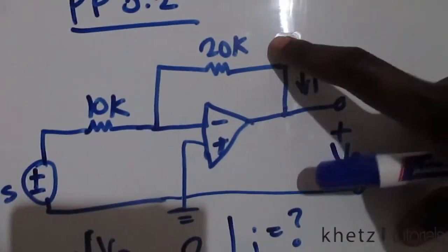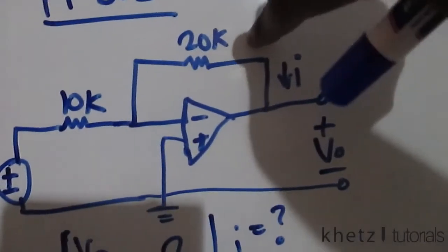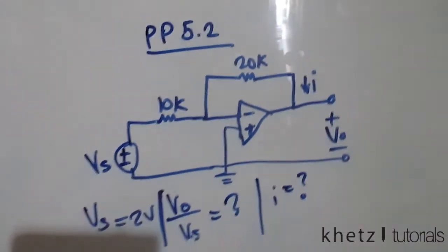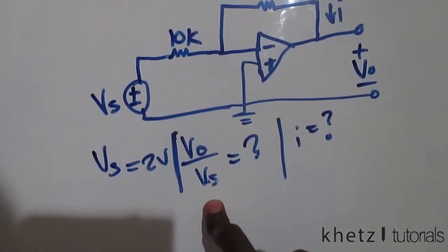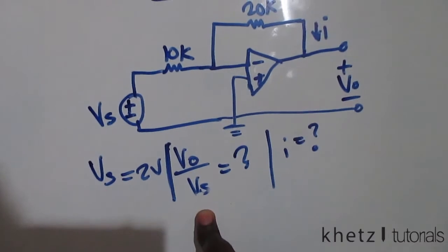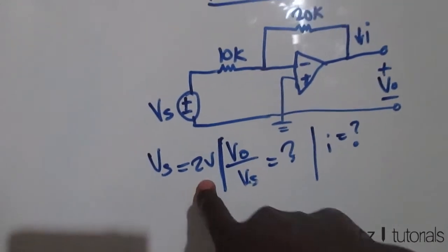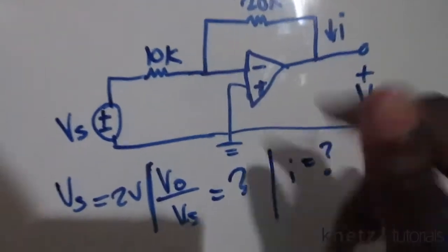Let's start by finding the closed loop gain, which is Vo divided by Vs. We're given a value of 2 volts, don't forget that. As you know by now, the voltage at that node or the voltage at that terminal is the same as the voltage at this terminal as well.